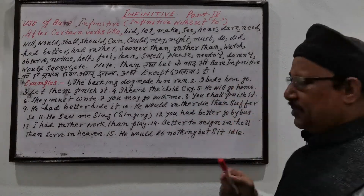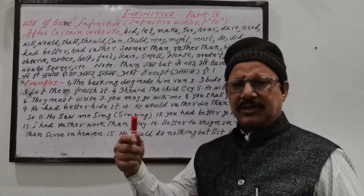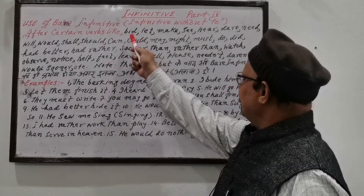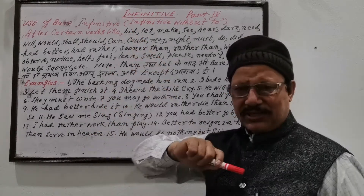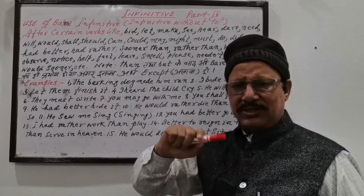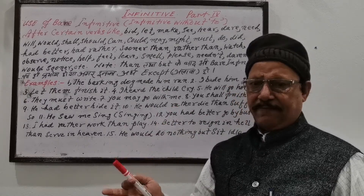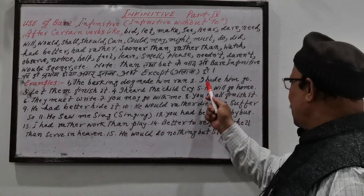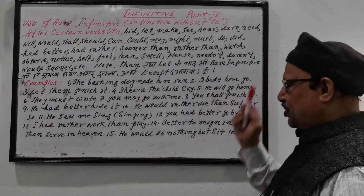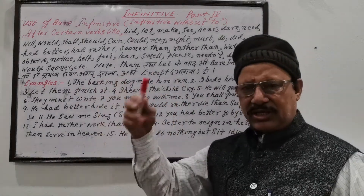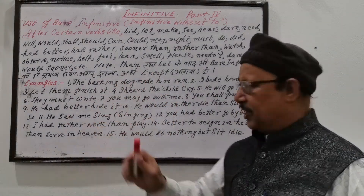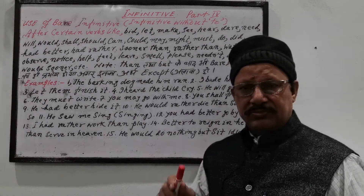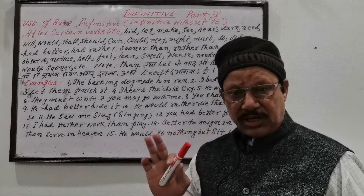'I made him go' — I sent him away. 'Bid' is the past tense form; bid means to say or to order. 'I made him go' — I made him leave, sent him away. But 'I made him to go' is incorrect.